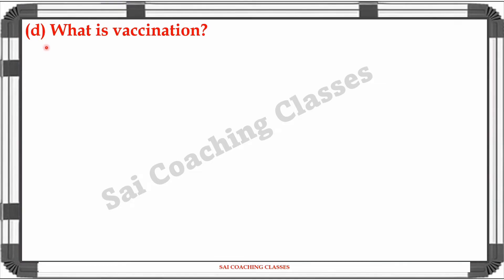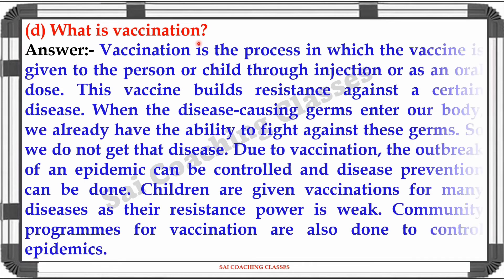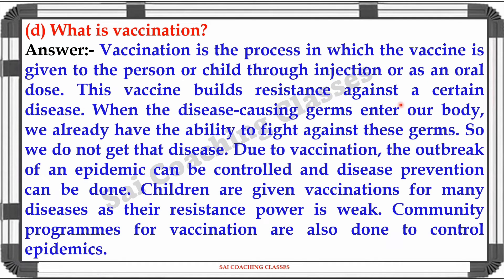Question D: What is vaccination? Answer: Vaccination is the process in which the vaccine is given to a person or child through injection or an oral dose. The vaccine builds resistance against a certain disease. When the disease-causing germs enter our body, we already have the ability to fight against these germs. So we will not get that disease due to vaccination.